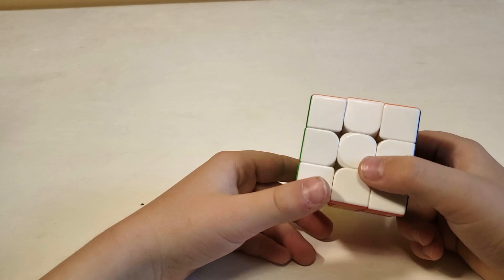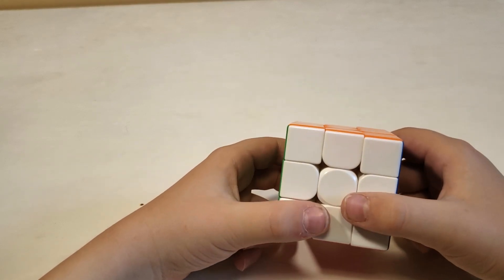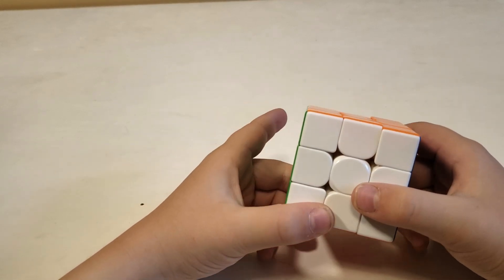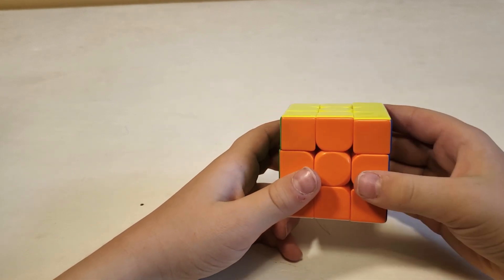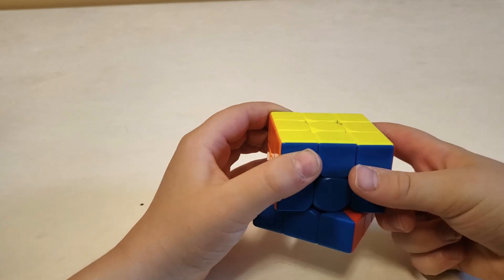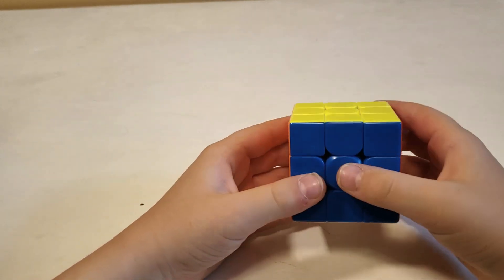Then x prime is an R prime, back three layers. Y would be a U, so you do a U but you turn three layers. Y prime would be that.